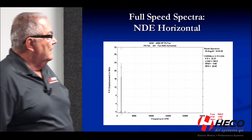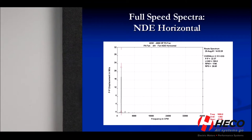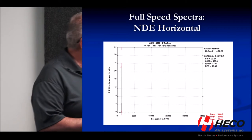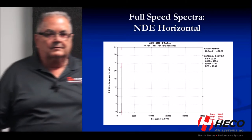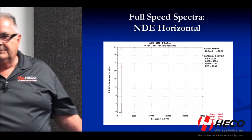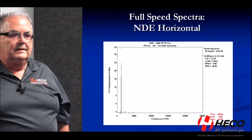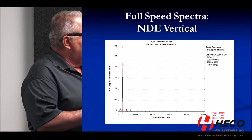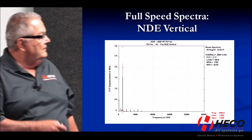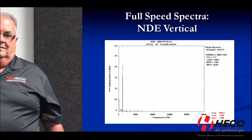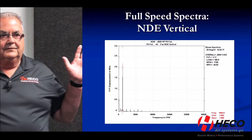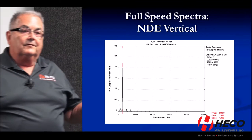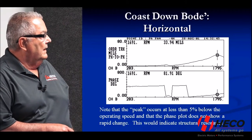We performed the initial online testing and confirmed what the tech rep had been telling us. The non-drive end horizontal showed about 22 mils at one times turning speed — a strong 1x in the horizontal. The vertical was only 2 mils, so we had a 22-to-2 ratio — an 11 to 1 ratio. Red flags go off when I see that. That says look for a resonance; it's not just a balance situation, because if it were imbalance I would expect the vertical to also be much higher than 2 mils.